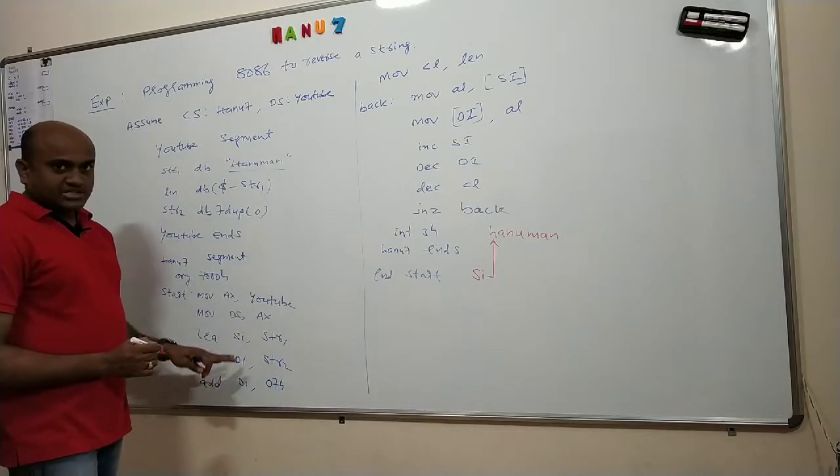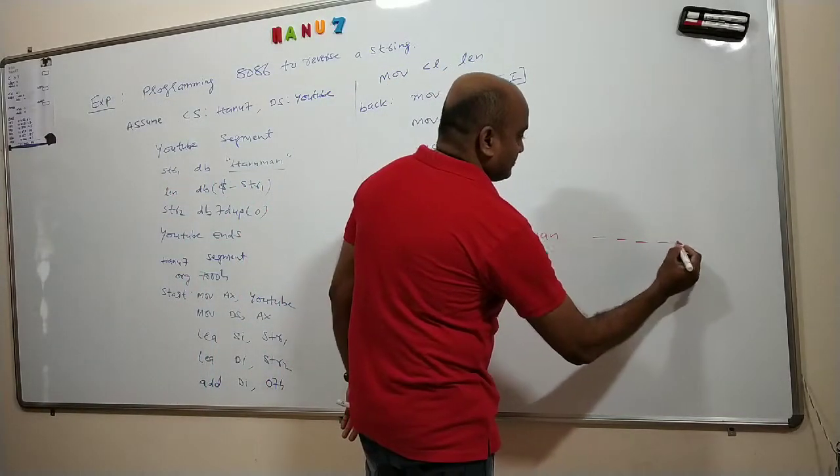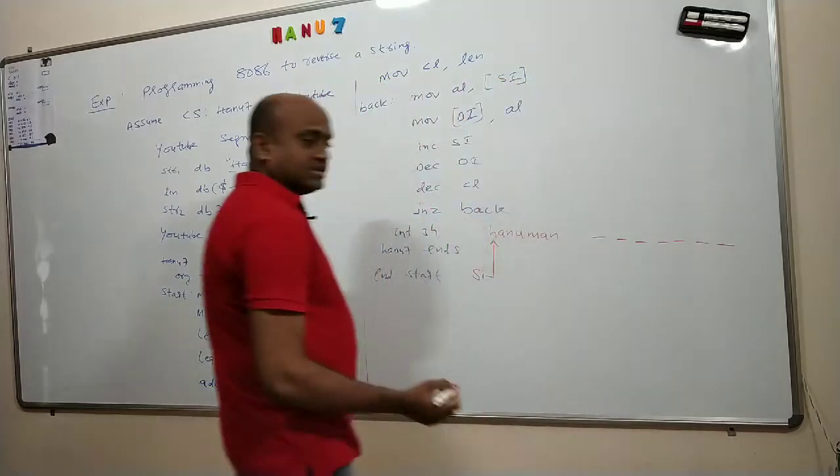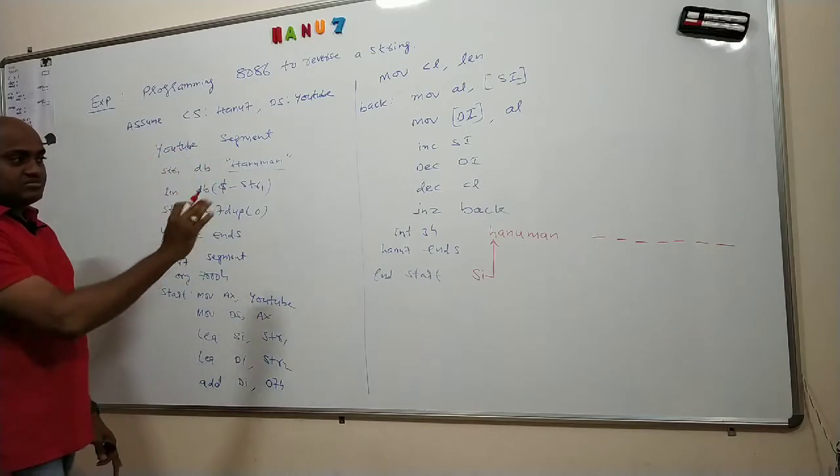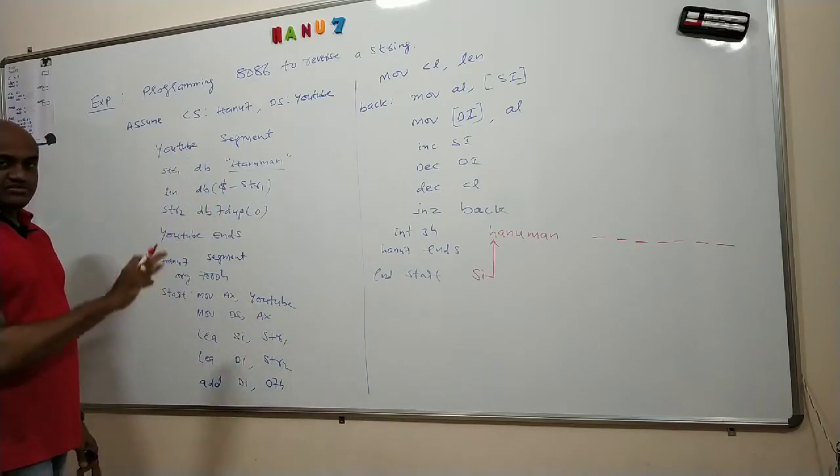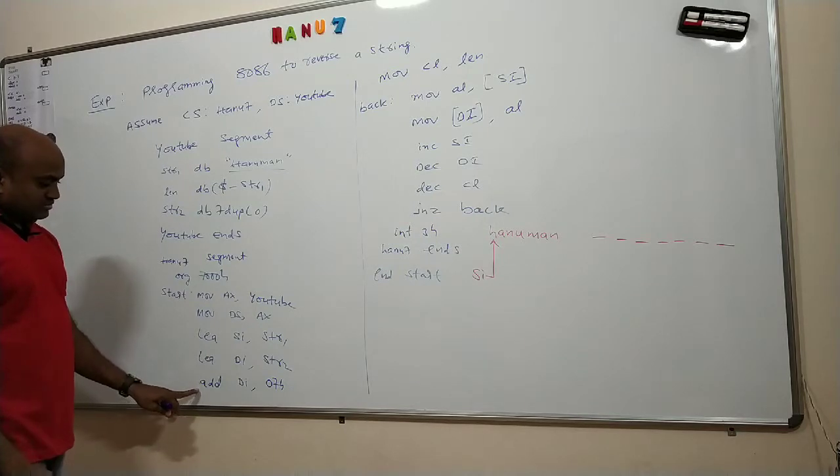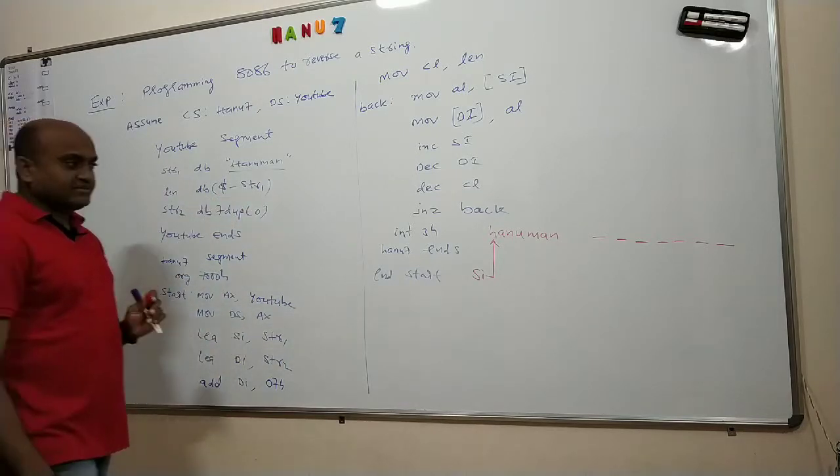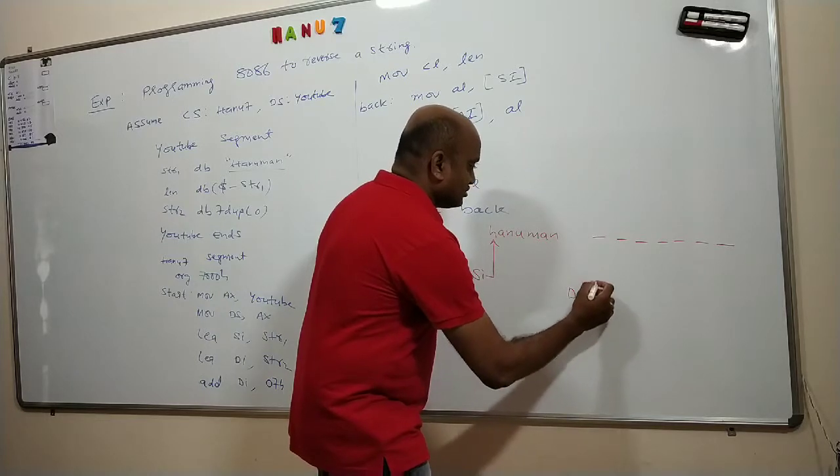Similarly, LEA DI, STR2. I have created 7 duplicate values. There I want to put this string in reverse order. Instead of moving, I want to reverse it. I have calculated the effective address of STR2 wherever it is there and loaded into DI. Now DI will act like a pointer to this memory.